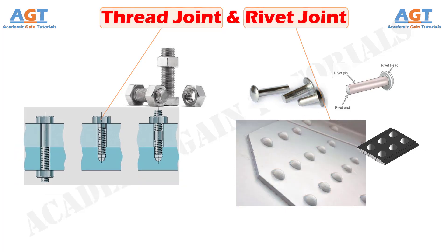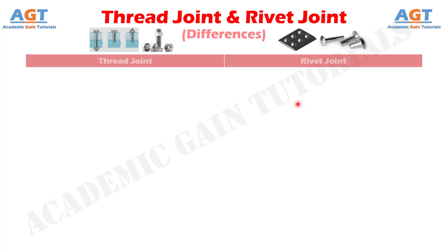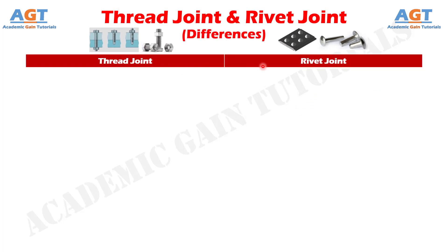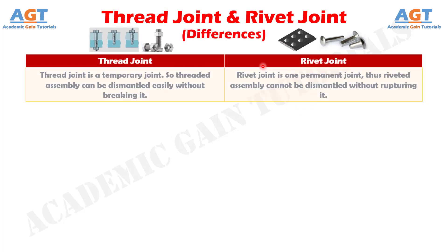So let's look into the basic differences between thread joint and rivet joint in a tabular form. Difference number one: thread joint is a temporary joint, so threaded assembly can be dismantled easily without breaking it, whereas rivet joint is a permanent joint, thus riveted assembly cannot be dismantled without rupturing it.